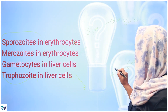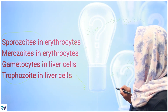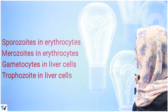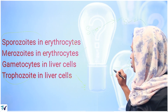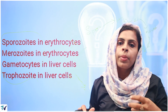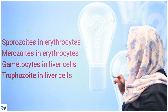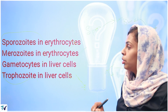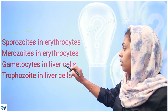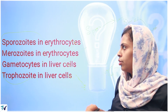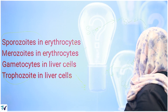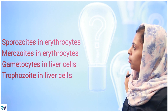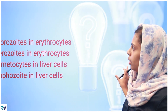These trophozoites then form a schizont stage. From the schizont, they form a sexual form called gametocytes. So gametocytes are seen in erythrocytes, not in liver cells. Therefore, the answer is merozoites in erythrocytes.